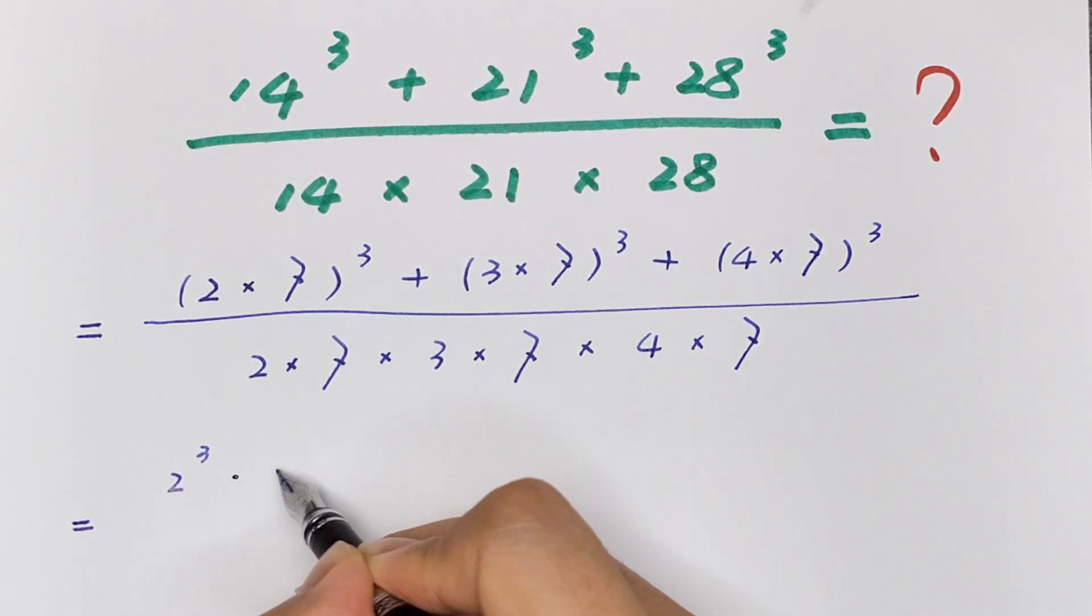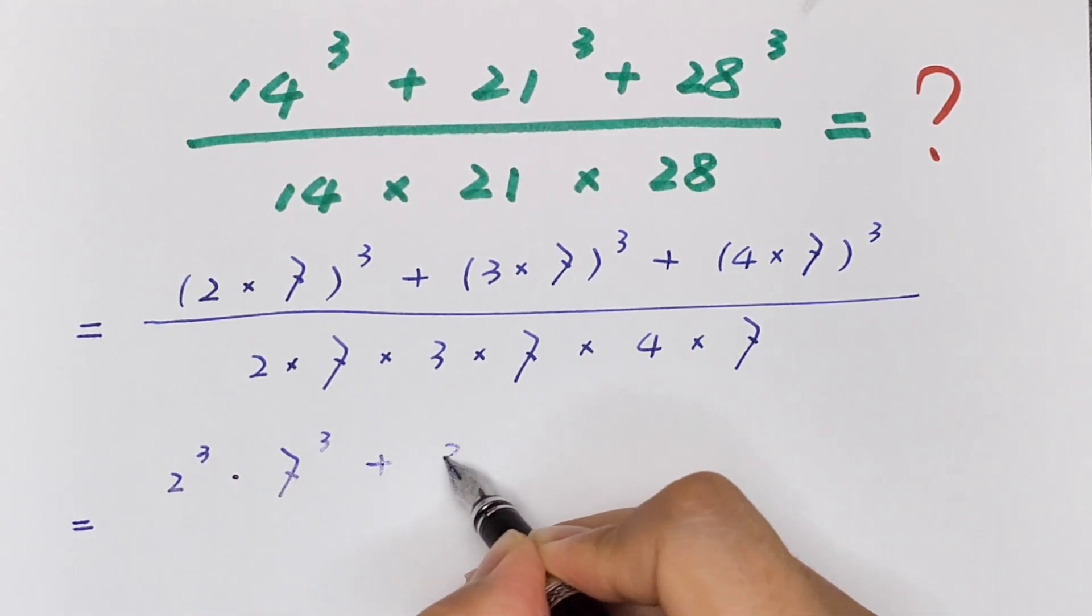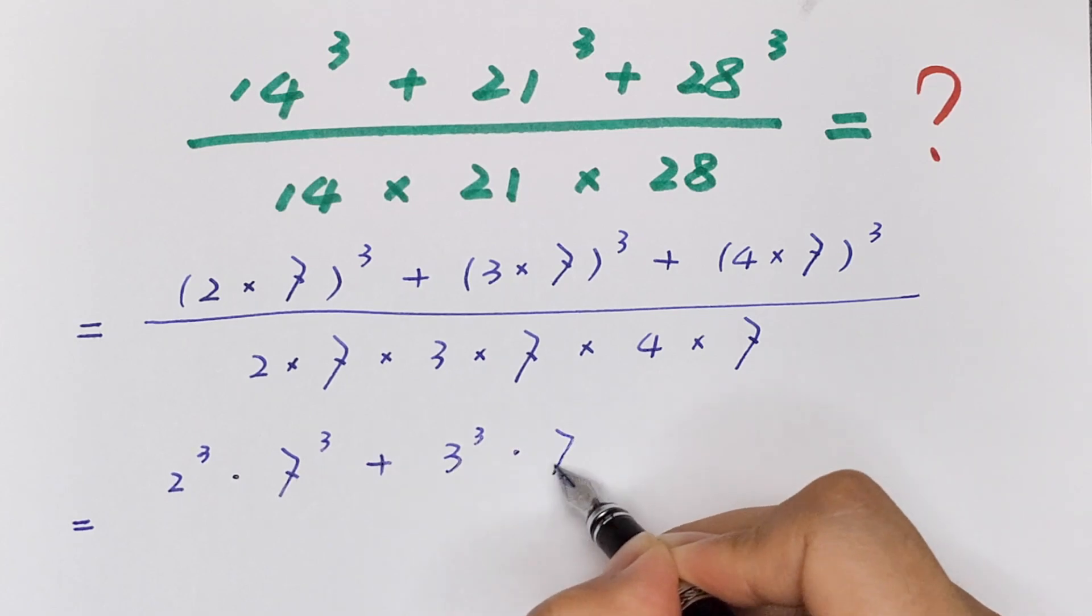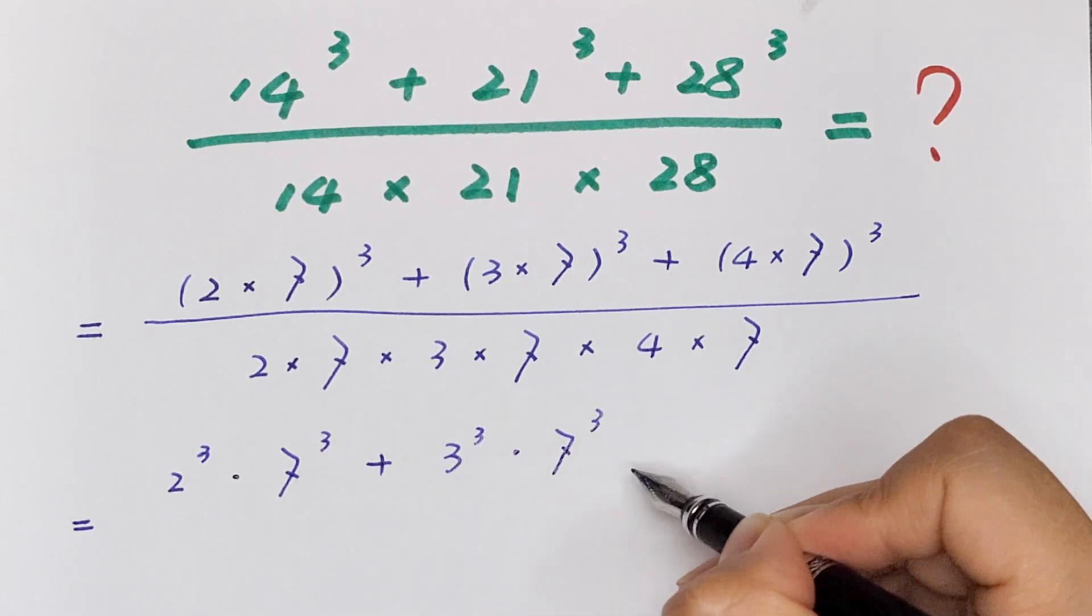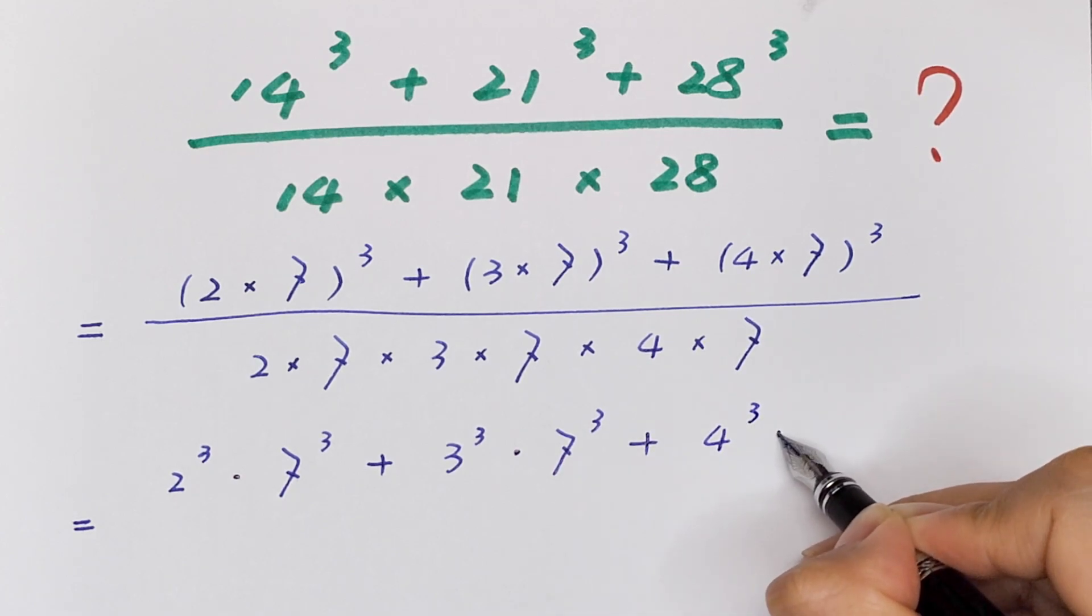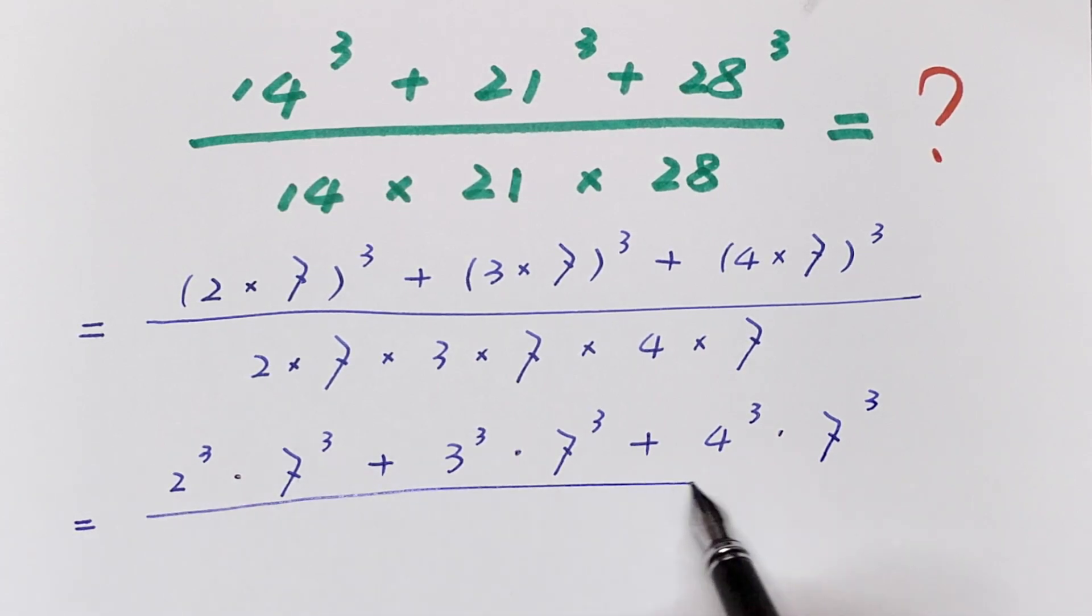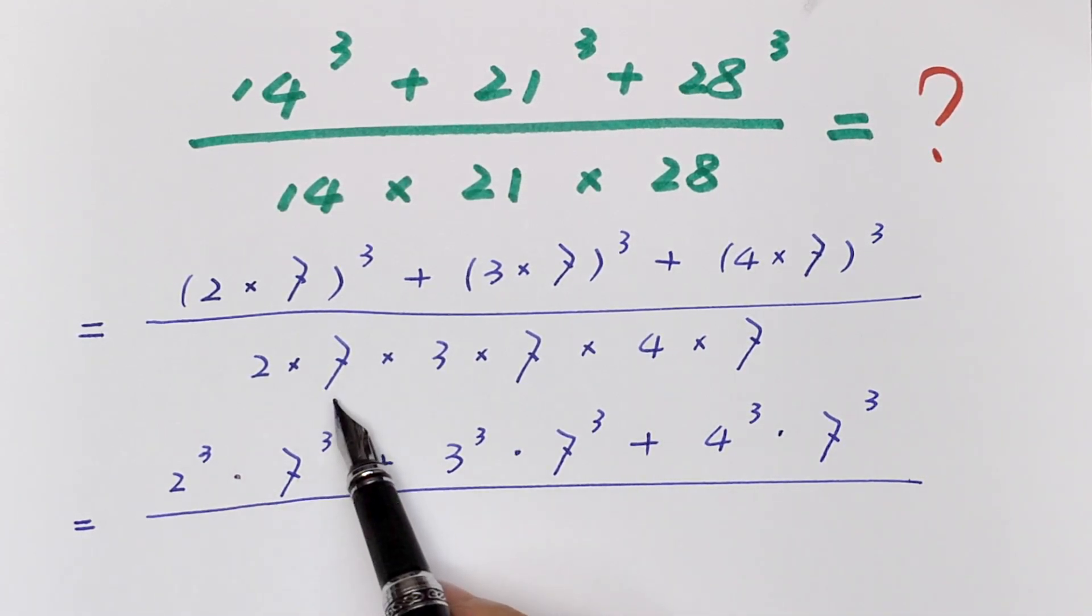It will be equal to 2³ × 7³ + 3³ × 7³ + 4³ × 7³.